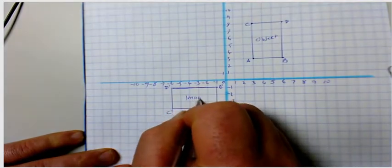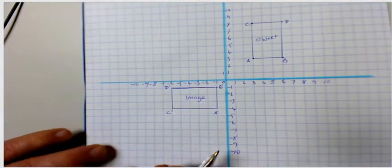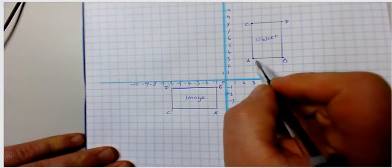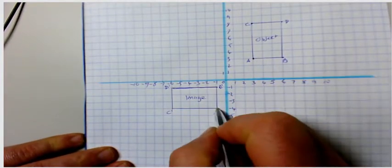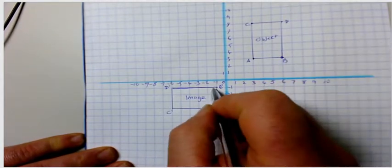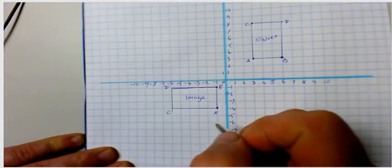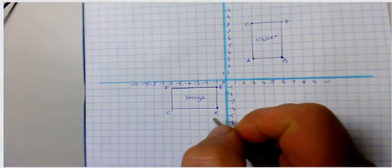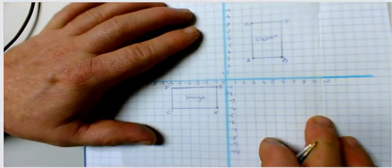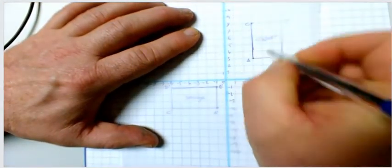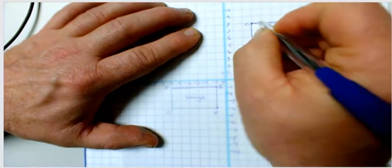That shape has now been rotated from my object to my image — this is my rotated shape. The first thing to notice is that point A on the object relates to A dash on the image, and B relates to B dash. Now I'm going to rotate it using tracing paper, drawing on the shape in question.